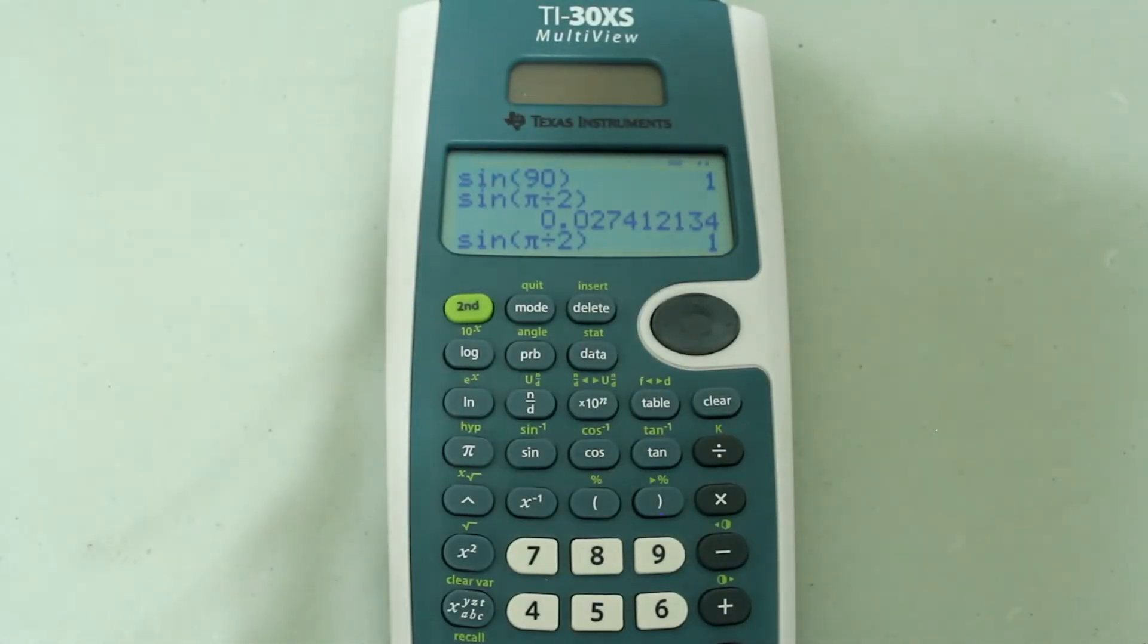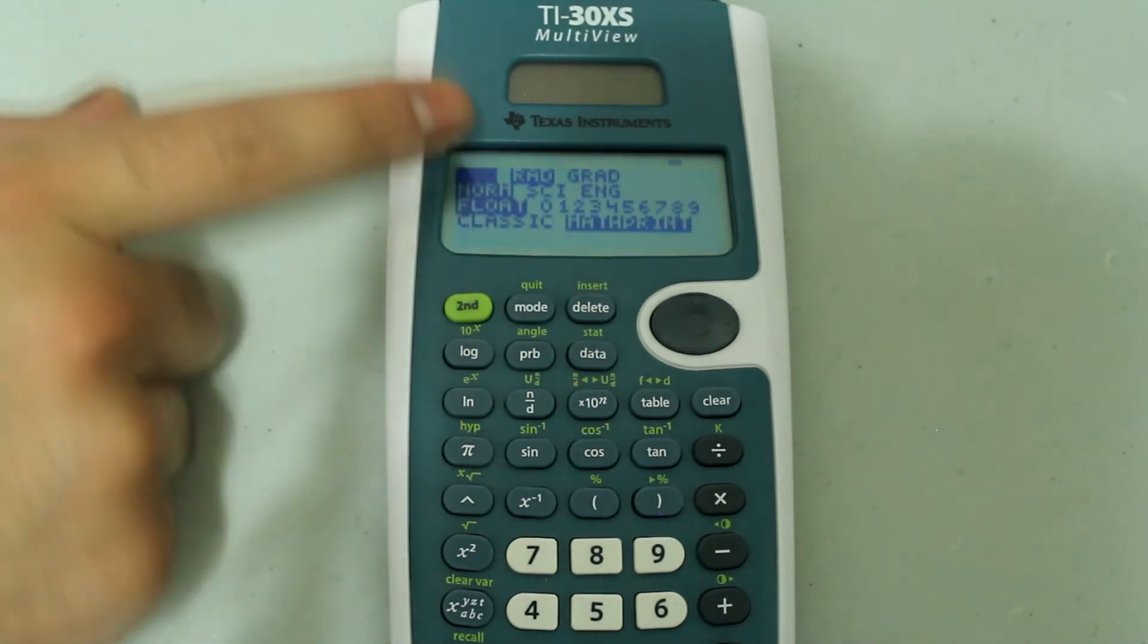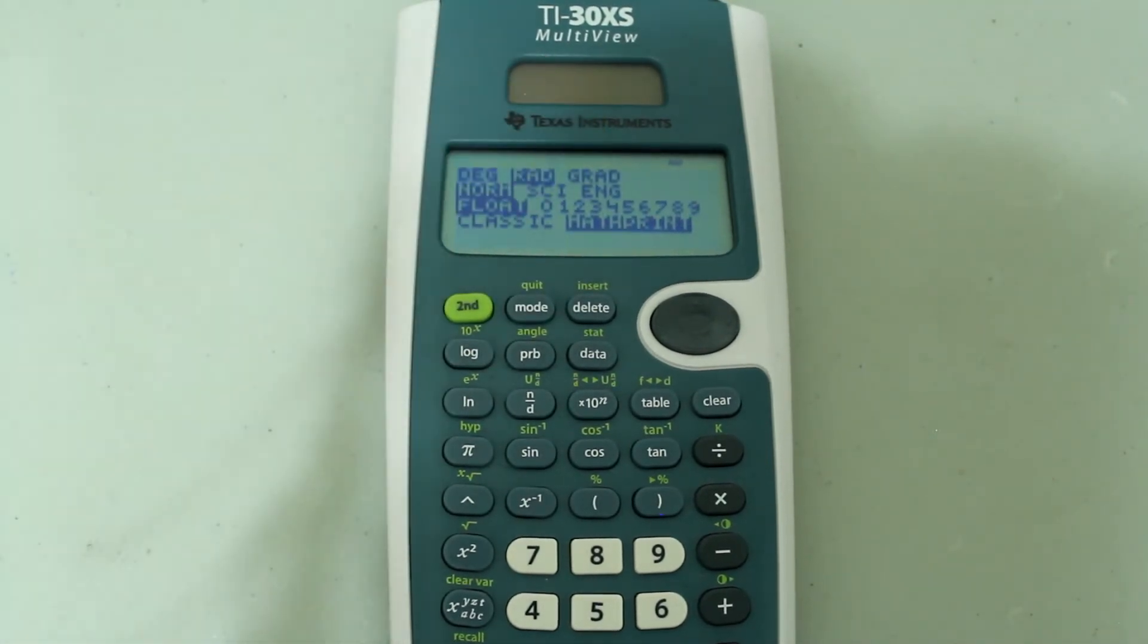Another mode that you can possibly be in is the gradients. So I just want to mention that a gradient is an angle measurement where one gradient is 1 hundredth of a right angle, or 90 degrees.